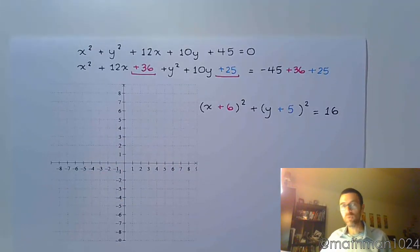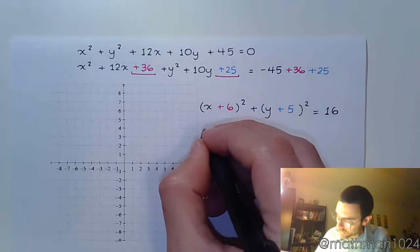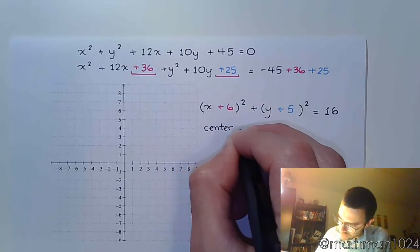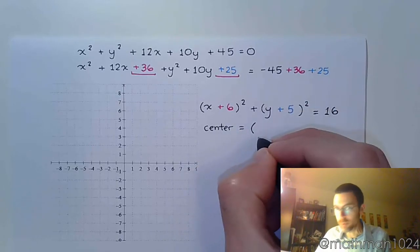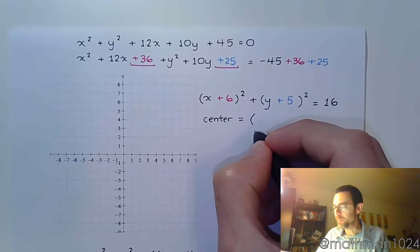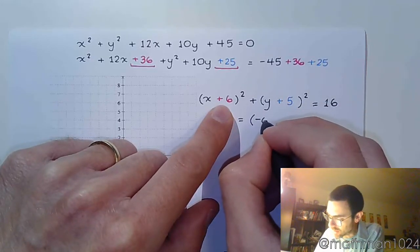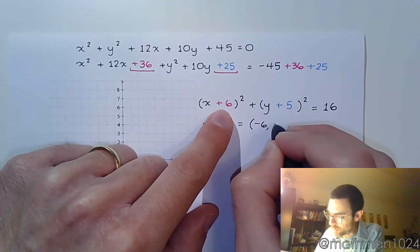And now we have this in center-radius form. So let's find the center. So the center is going to be the ordered pair. Now remember how we were doing this before. You take the opposite of what you see here. So it's going to be negative 6. And the opposite of this guy, which is going to be negative 5.